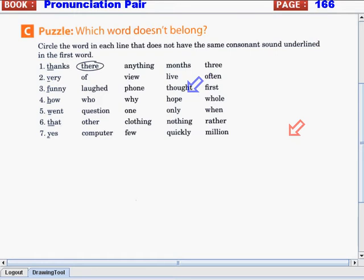For the continuation of our review, we will answer activity letter C Puzzle: which word doesn't belong? But before we start, let's read our direction. Circle the word in each line that does not have the same consonant sound underlined in the first word.